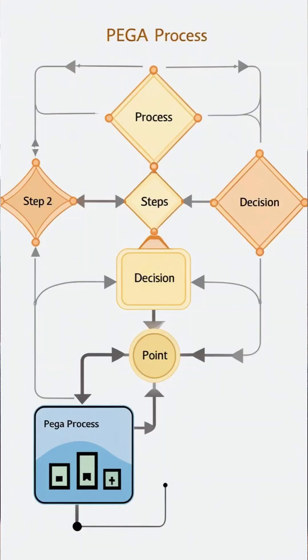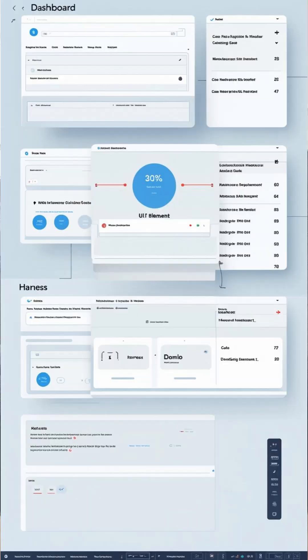Once rule resolution is completed, the flow logic starts executing. If the flow contains another assignment shape, the current assignment should be closed and a new assignment created and opened. In this process, UI and harness logic comes into picture — the current harness is closed and the next harness is launched.